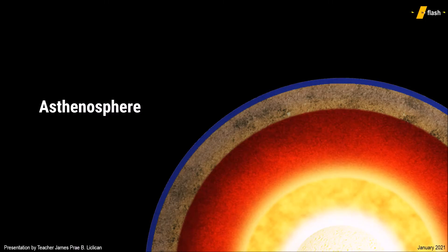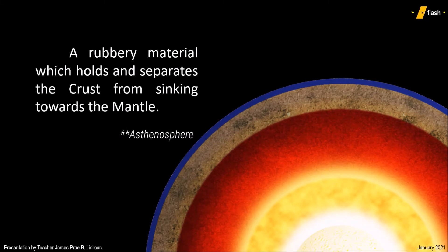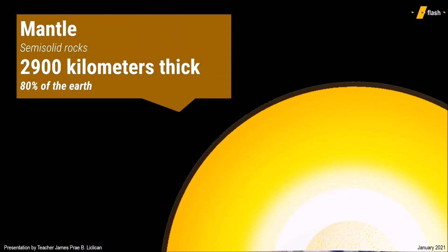Deeper than the crust is where the semi-solid layer is found. The crust and the mantle are separated by the asthenosphere. The asthenosphere is a rubbery material which holds and separates the solid crust from sinking towards the hot, semi-solid mantle. The mantle is the thickest layer at about 2,900 km thick, making up 80% of the Earth and holding most of the planet's mass.